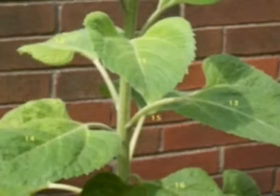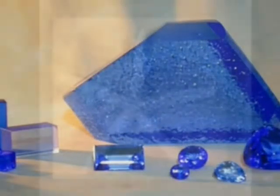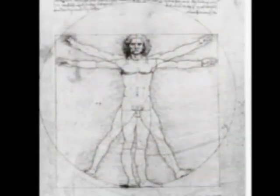Let us have a brief introduction to the structure in these objects. In nature, plants, trees, minerals, animals, and humans actually have an underlying structure and pattern.